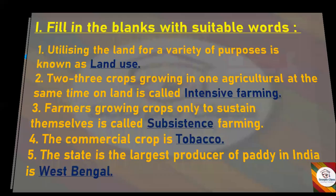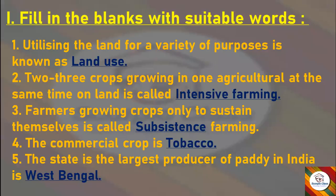Now let's get started with the first section: Fill in the Blanks with suitable words. First: Utilizing the land for a variety of purposes is known as — answer is 'land use'. Next: Two to three crops growing in one agricultural field at the same time on the same land is called — answer is 'intensive farming'. Next: Farmers growing crops only to sustain themselves is called — answer is 'subsistence farming'.